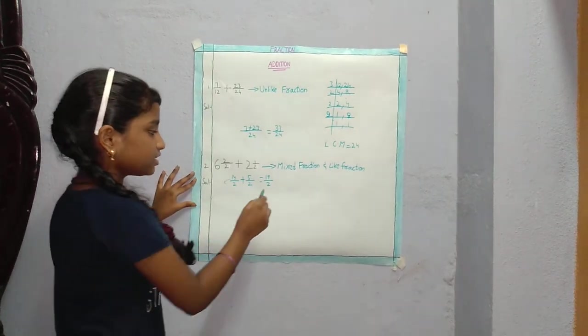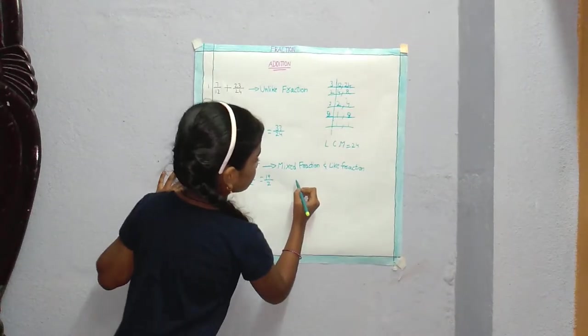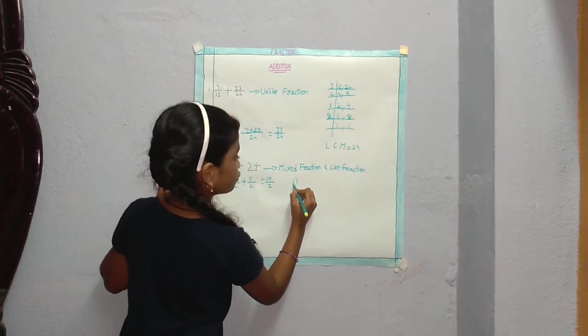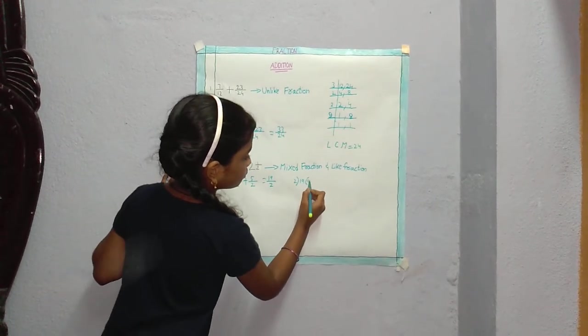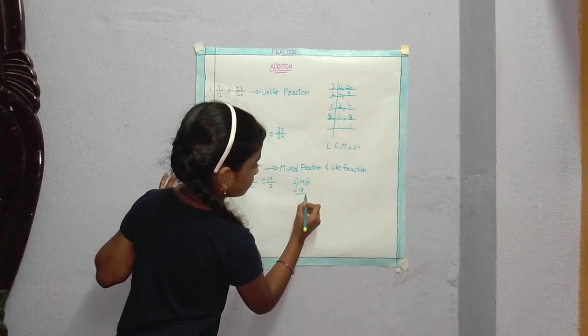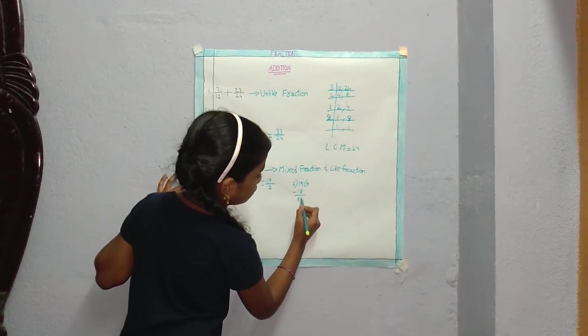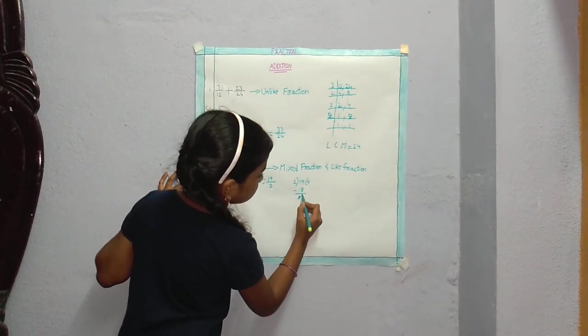Now we have to change it into mixed fraction by doing division. 2 by 19. Now 2 times 9 is 18. 1, 0. Cancel. 1. This is the remainder.